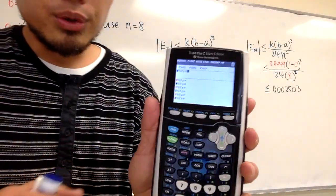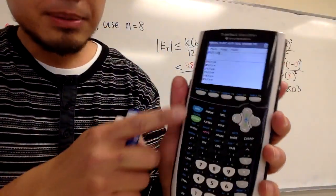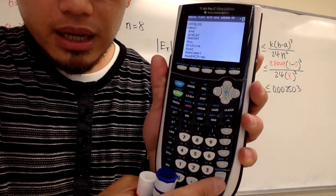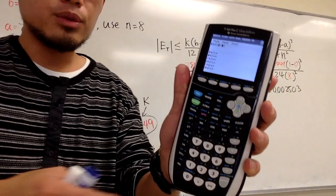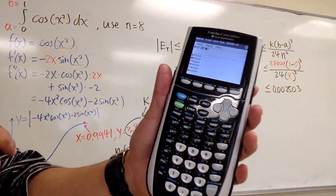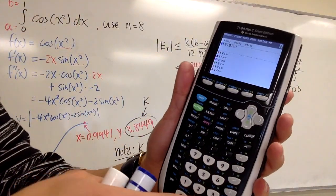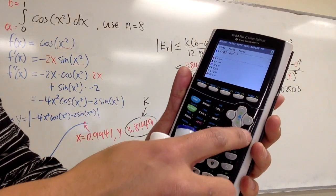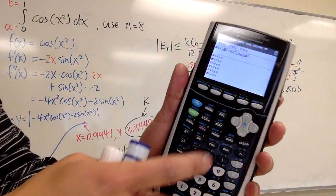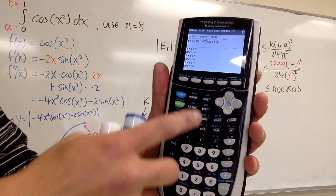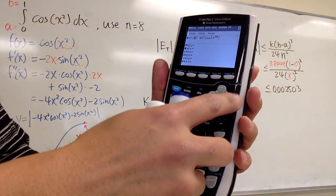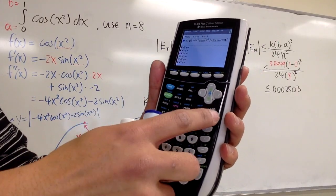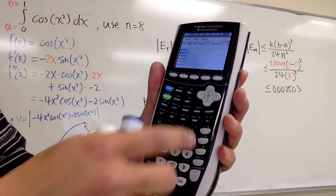On the graphing calculator, go to graph and enter the absolute value — use second and catalog to get the absolute value function. Then punch in the equation: negative 4x squared cosine of x squared, close parentheses, then minus 2 sine of x squared.